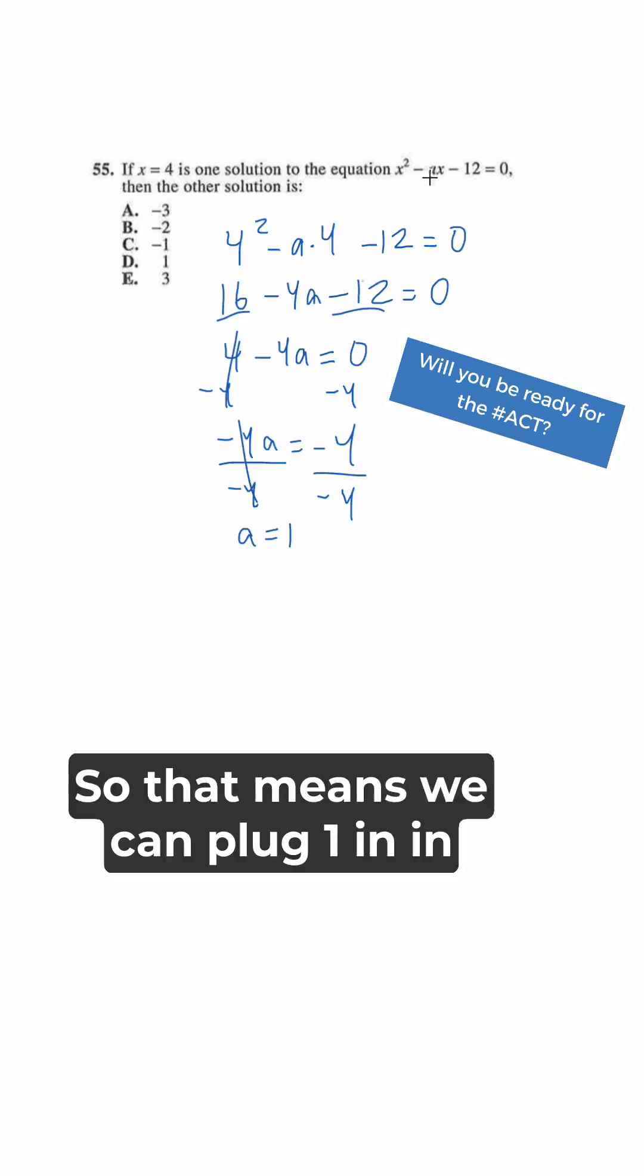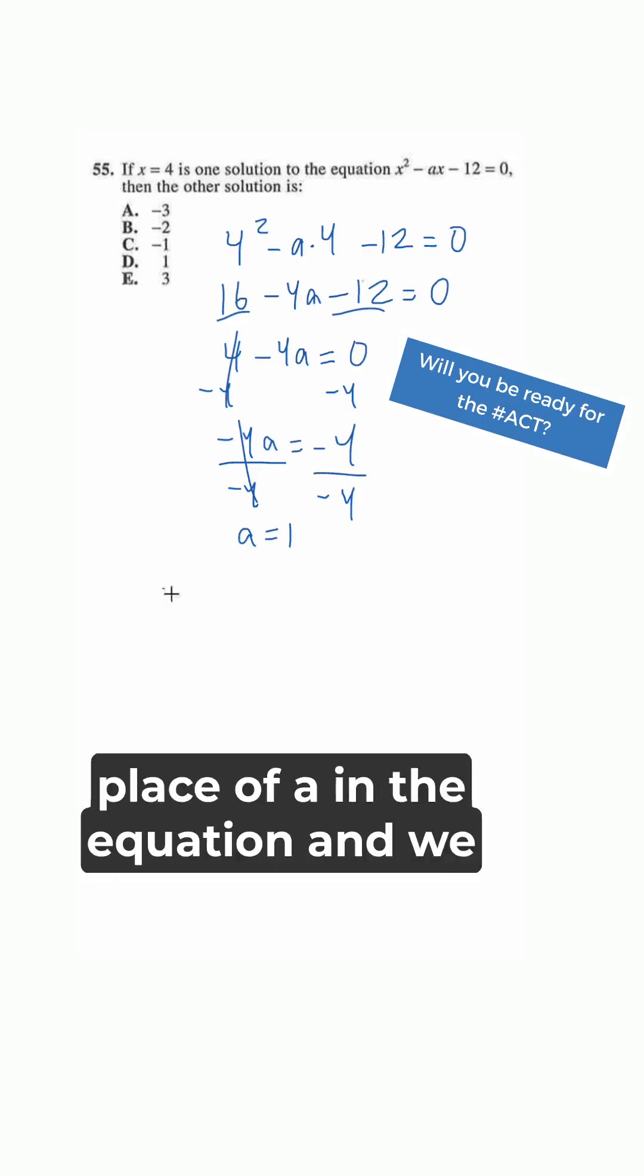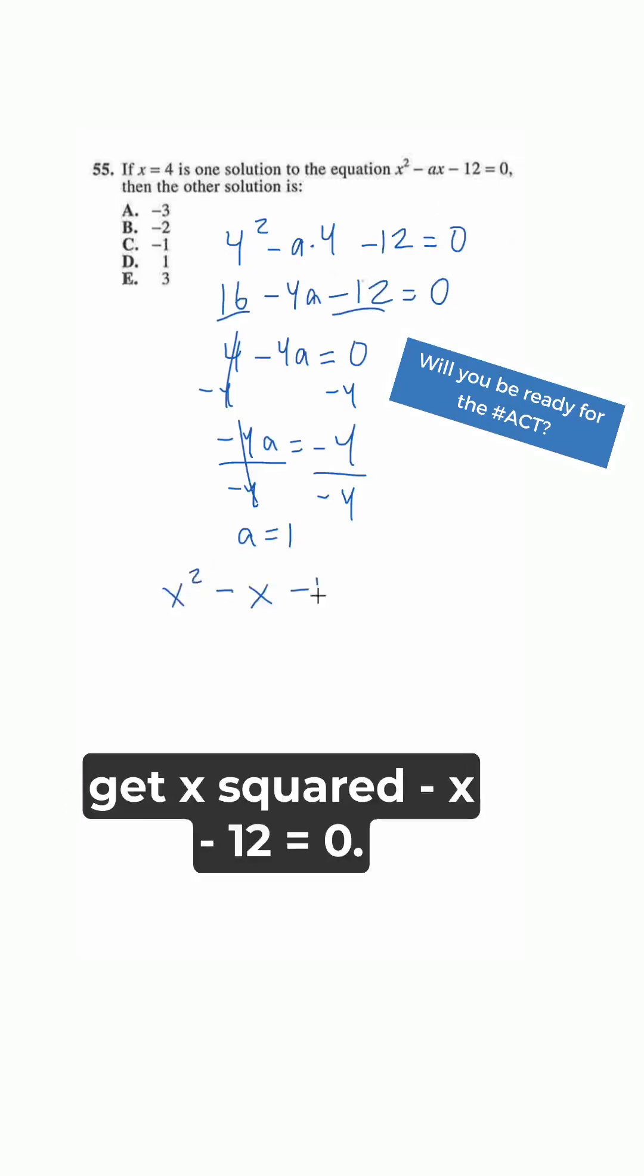So that means we can plug 1 in place of a in the equation and we get x squared minus x minus 12 equals 0, and now we can factor.